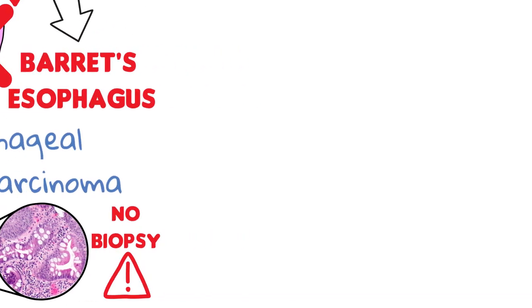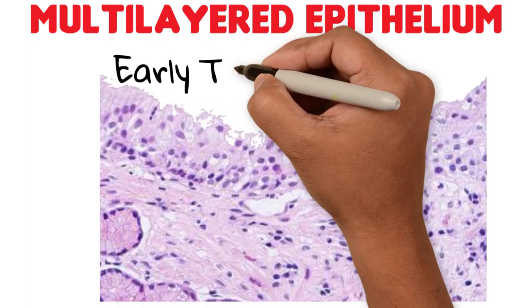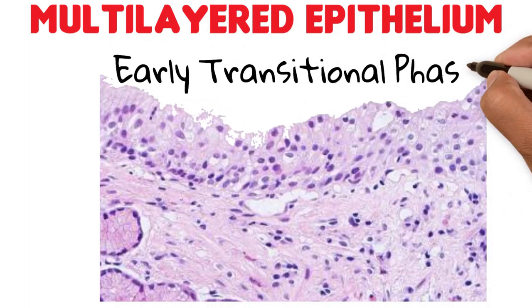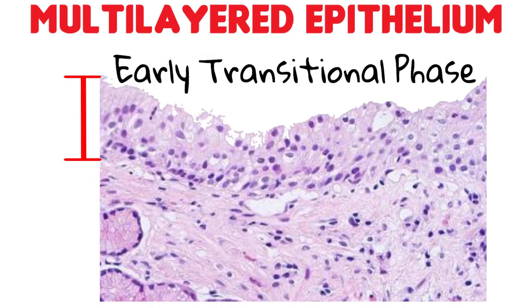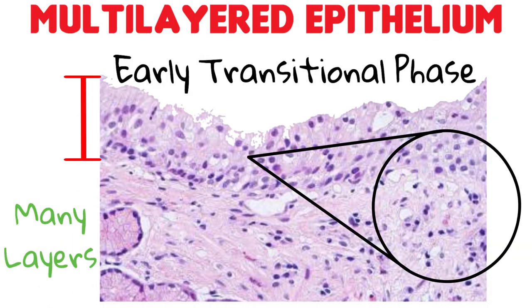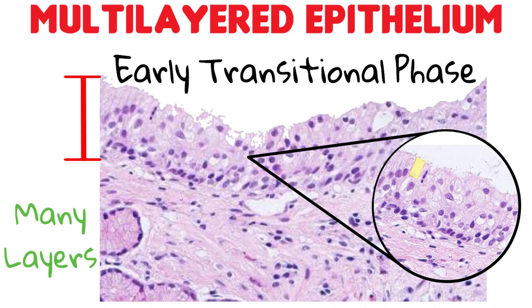Finally, another type of epithelium known as multilayer epithelium has been described as a possible early transitional phase to columnar metaplasia. As we can see here, it is characterized by multiple layers of cells with squamous appearance but with columnar cells on top.